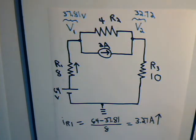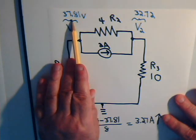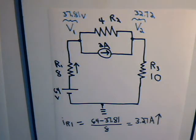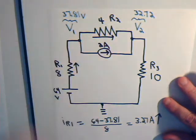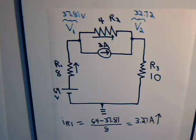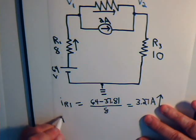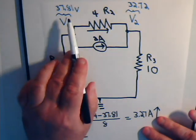now we know the direction because this is at a positive potential of 37.81 volts and this is at 32.72 volts. So the current in actuality is going to be in that direction, going to the right.